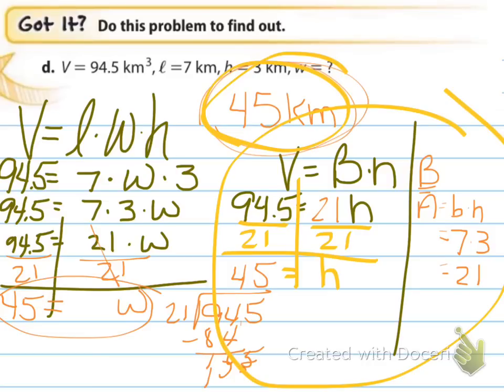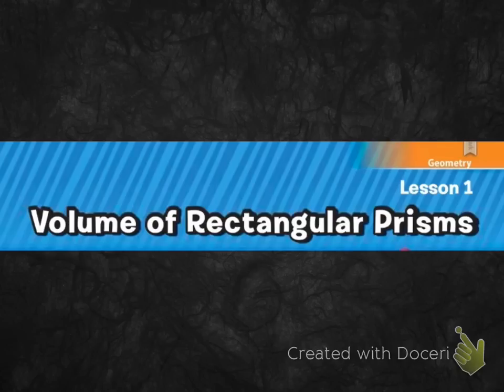Alright. So that ends our section, our lesson on volume of rectangular prisms. We're going to go over a lot more examples in class. Finish up that worksheet that I handed out today. And just go over some more examples. So I'll see you in school.